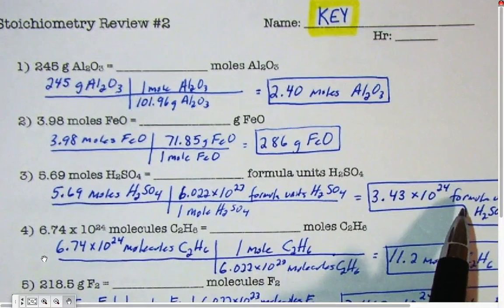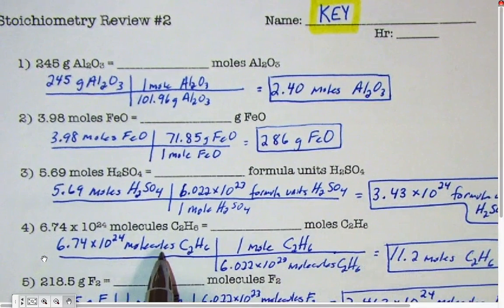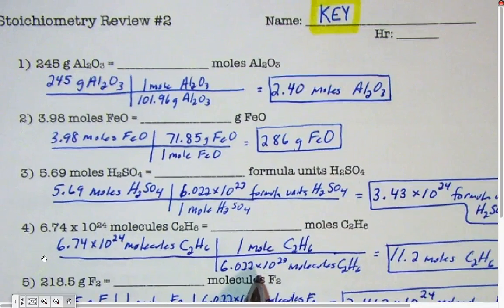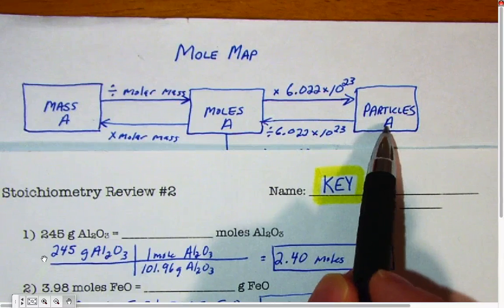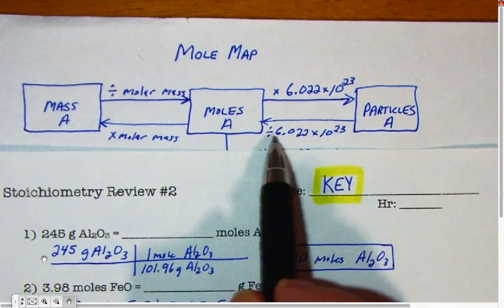When we wanted to do the opposite, we made a t-chart where we started with particles and divided by the molar mass. Go back up to the mole map, that's what this chart shows. If you want to go from particles to moles, you divide by the molar mass.